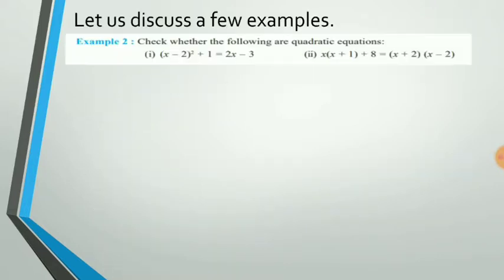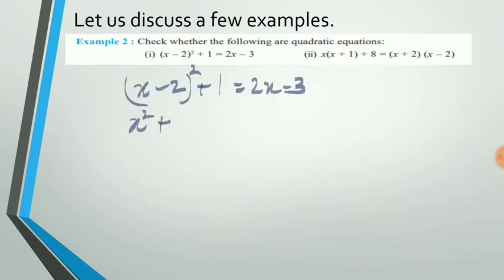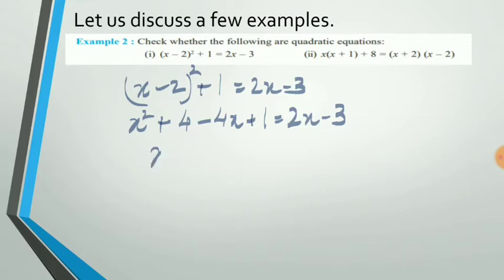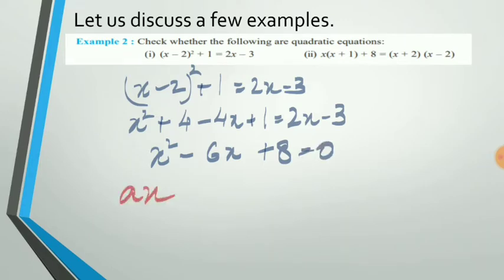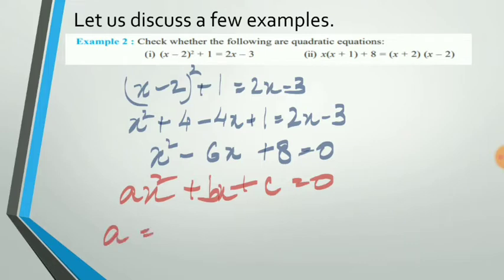Let us take up a few questions to check whether the following are quadratic equations or not. Consider the first part: x squared plus 4 minus 4x plus 1 equal to 2x minus 3, which on simplification gives x squared minus 6x plus 8 equal to 0. Clearly, it is of the form ax squared plus bx plus c equal to 0, with a equal to 1, b equal to minus 6, and c equal to 8. So it is a quadratic equation.